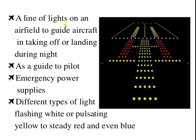A line of lights on an airfield guides the aircraft in taking off or landing during the night. It is also very helpful at the time of emergency power supply. Different types of lights are used — flashing white, pulsating yellow, steady red, and even blue. Airport lighting is very helpful for the pilot at the time of takeoff and landing during the night.